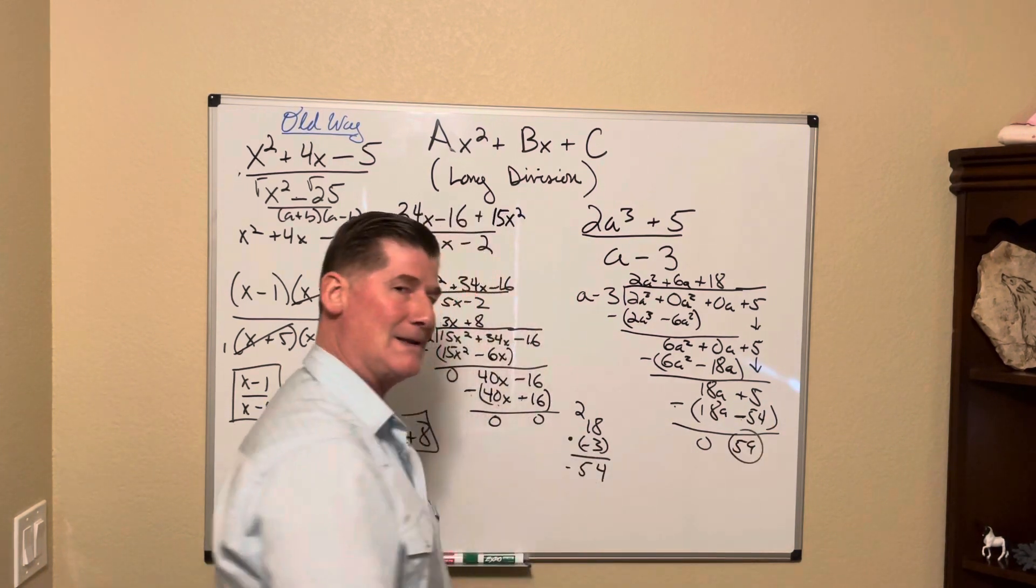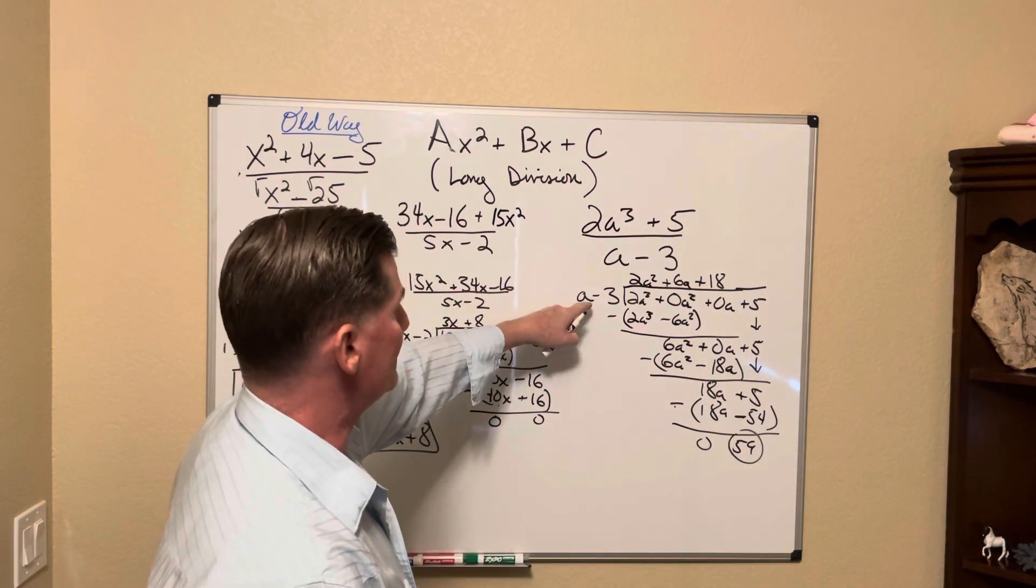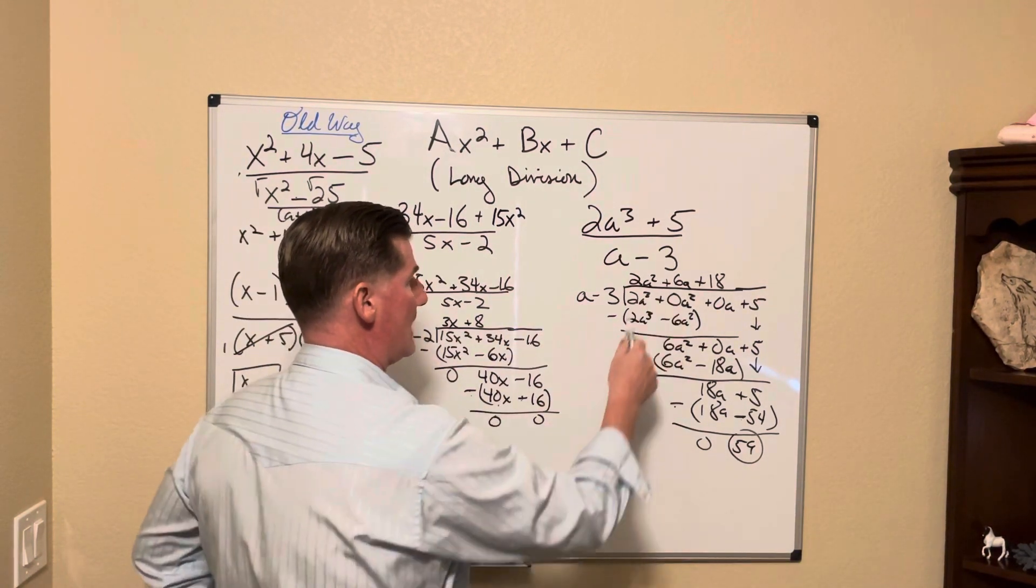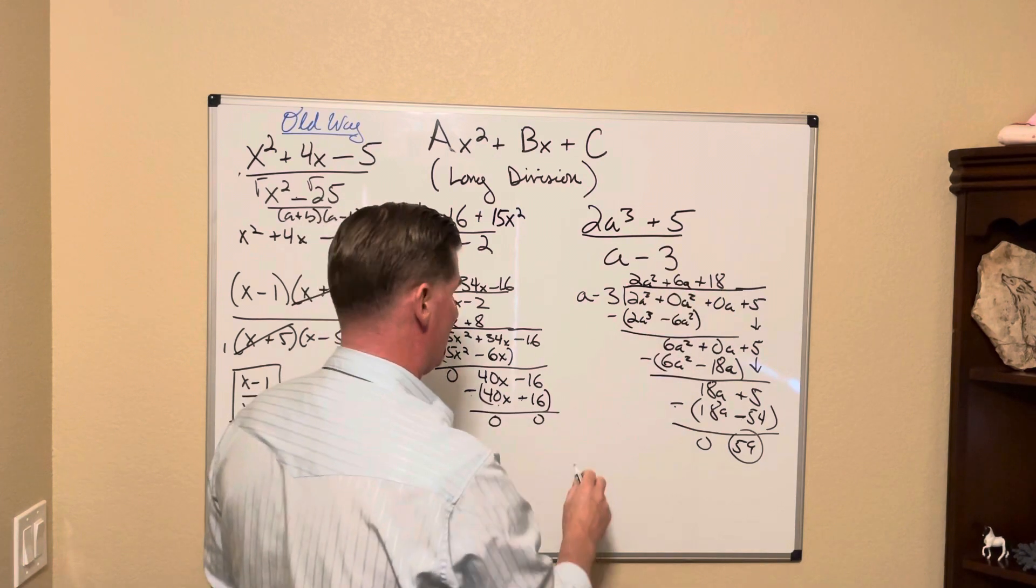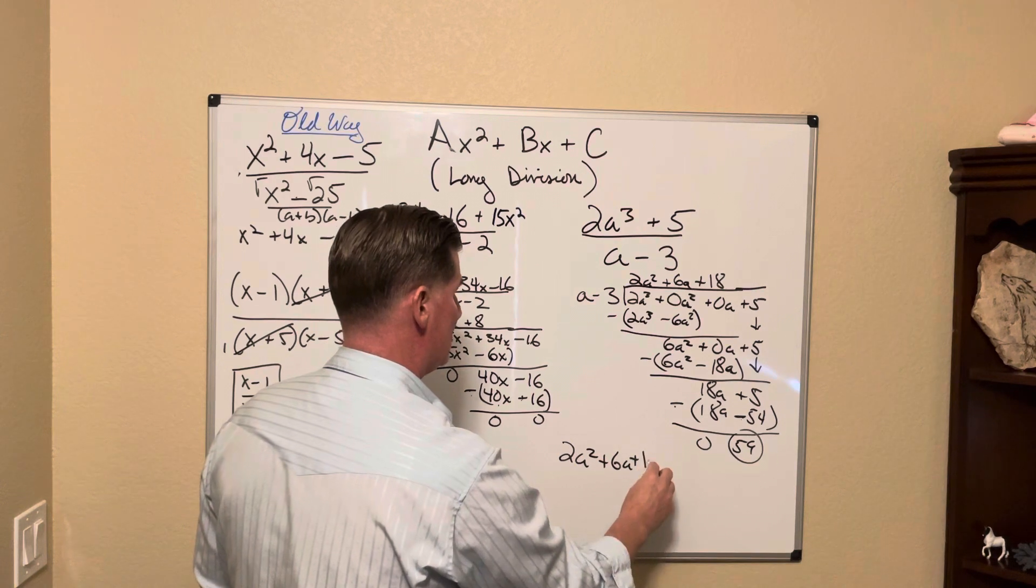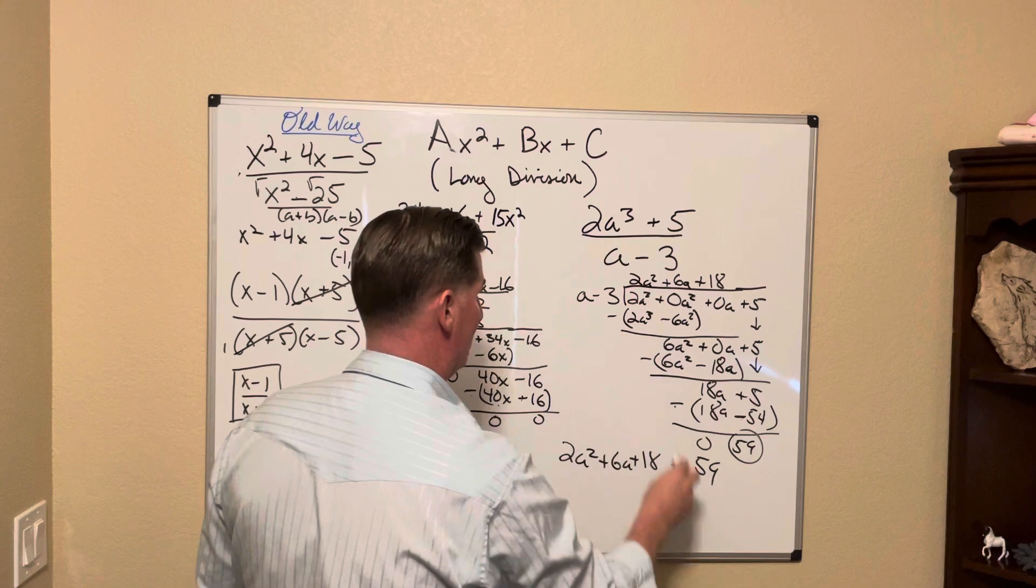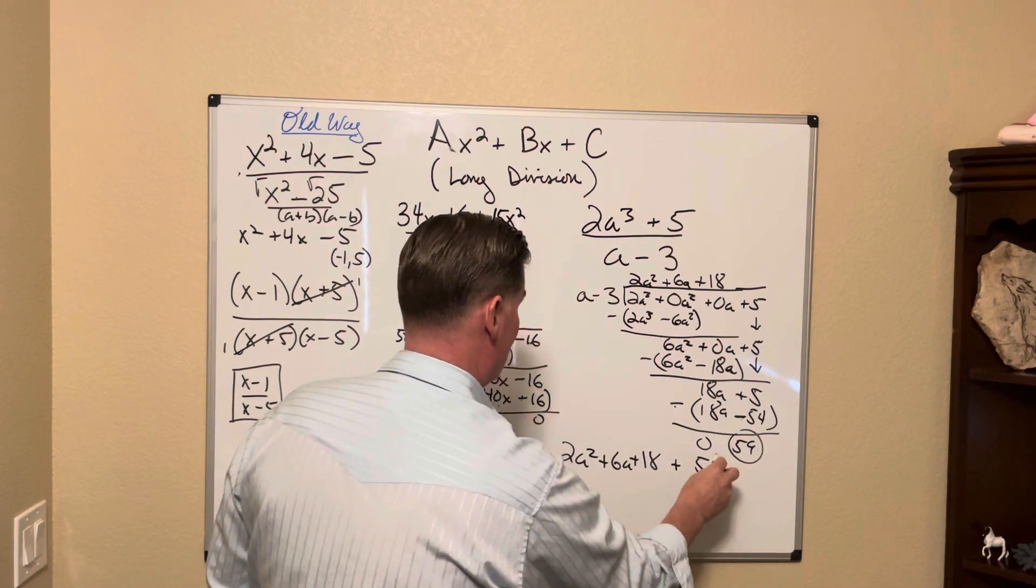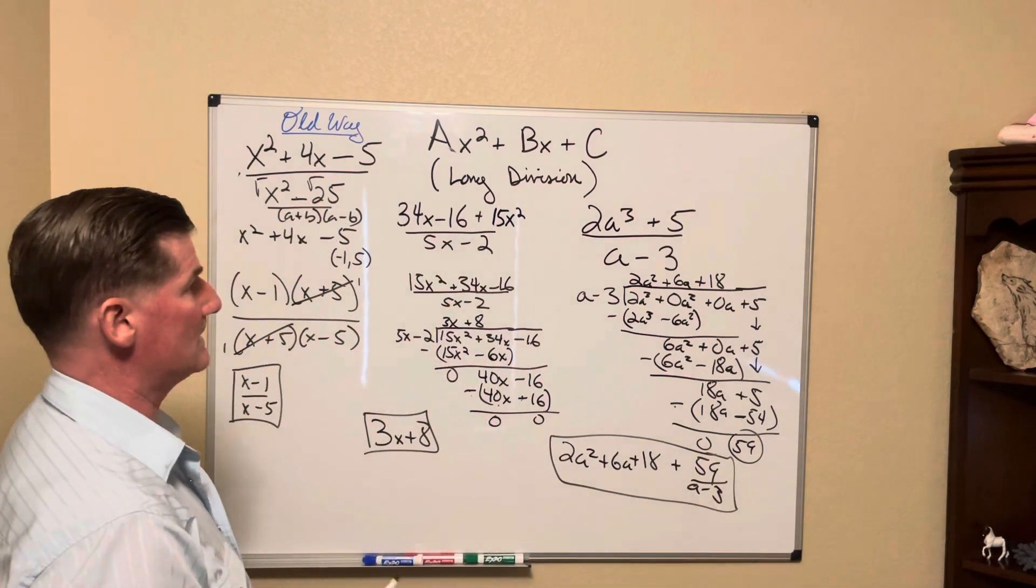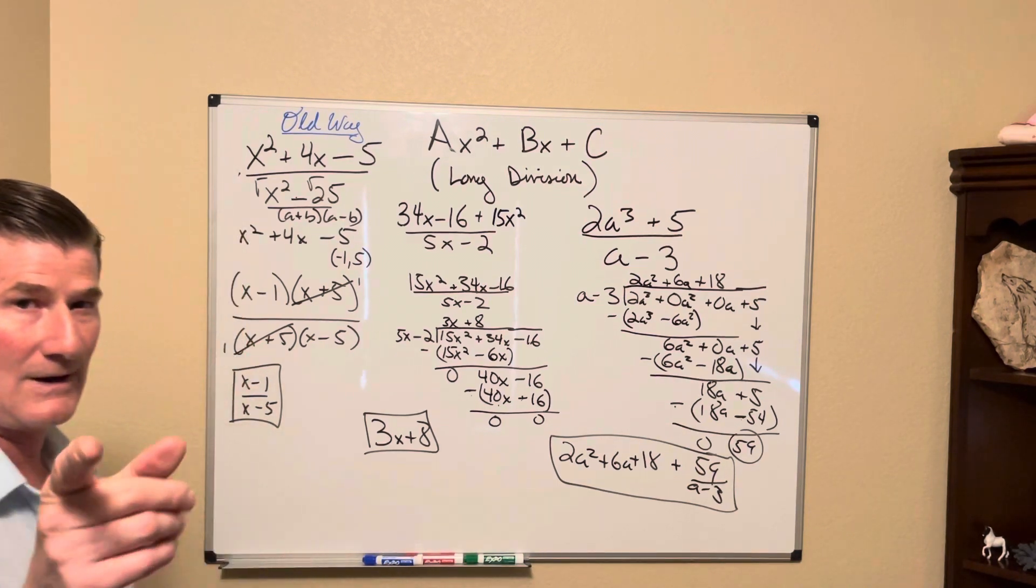Look, you've got a remainder. How do you write that? It's real simple. If you remember, we used to write remainders over the divisor. It's the same thing we're going to do. First thing we're going to do is we take our portion, this portion that we've worked as the quotient, which is 2a squared plus 6a plus 18. And since that's positive, we're just going to say plus 59 over the remainder a minus 3. Is it yucky? Yeah, sure. But that's the answer. That's how you deal and use long division to deal with some of these yuckier problems that don't come in clean. All right, we'll see you on the high ground.